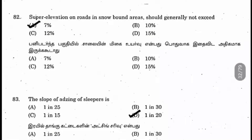Question 82: Super elevation on roads in snow-bound areas generally should not exceed 7%, expressed as 1 in 15. This applies to plain roads and rolling terrain as well — the answer is 7% for those too. For hilly regions without snow-bound areas, the answer is 10%.